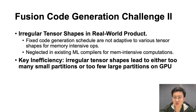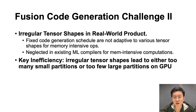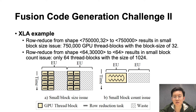Another challenge is the irregular tensor shapes in real-world products. The fixed code generation schedules in existing works are not adaptive to various tensor shapes for memory-intensive ops. It tends to lead to either too many small partitions or too few large partitions on GPU. For example, in row-reduction ops in XLA, if there are too many small rows to reduce, the block size will be too small; if there are too few large rows to reduce, there will be too few thread blocks.